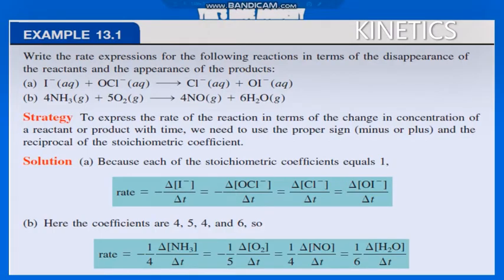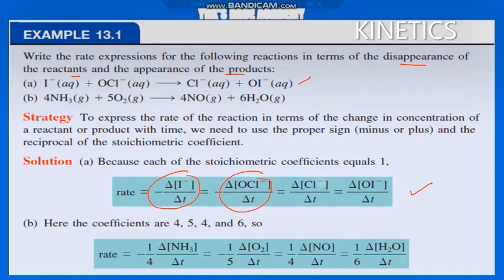Problem 1: Write the rate expressions for the reaction I⁻(aq) + OCl⁻(aq) → Cl⁻(aq) + OI⁻(aq) in terms of disappearance of reactants and appearance of products. Rate = −Δ[I⁻]/ΔT = −Δ[OCl⁻]/ΔT = Δ[Cl⁻]/ΔT = Δ[OI⁻]/ΔT. The minus signs indicate disappearance of reactants and the positive delta expressions indicate appearance of products — forming versus being consumed.